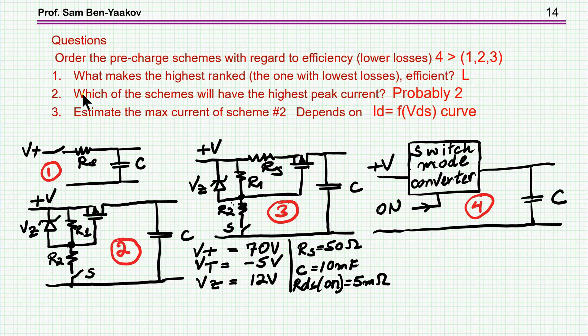So this is now the question of the peak current. We can now answer all the questions. The order of the various configuration with regard to efficiency is obviously 4, which is this, has the highest efficiency. All the others have the same efficiency.